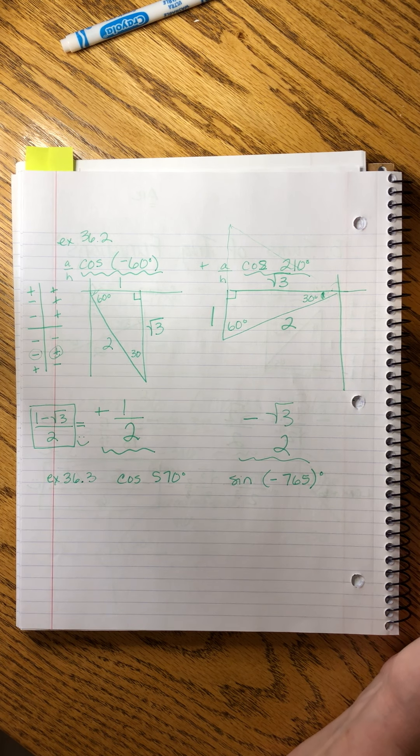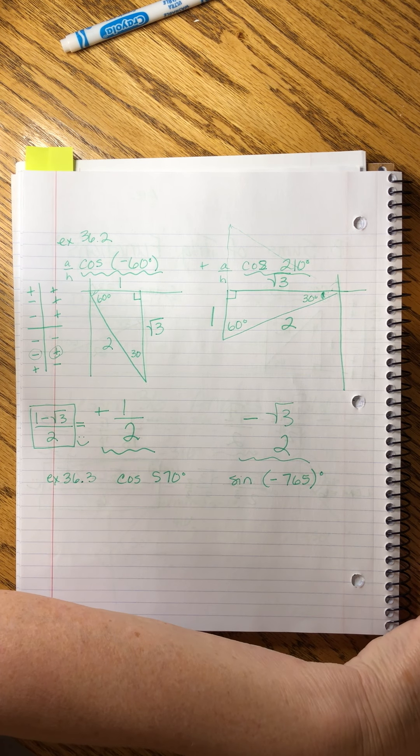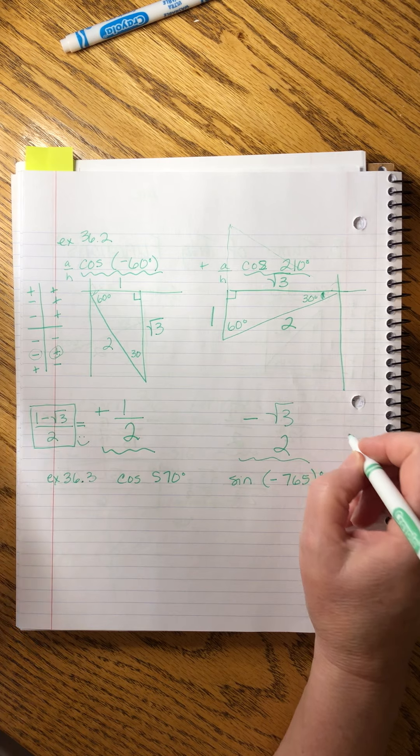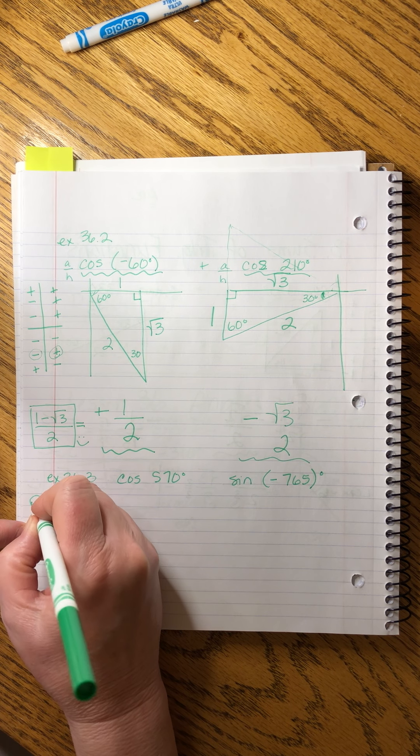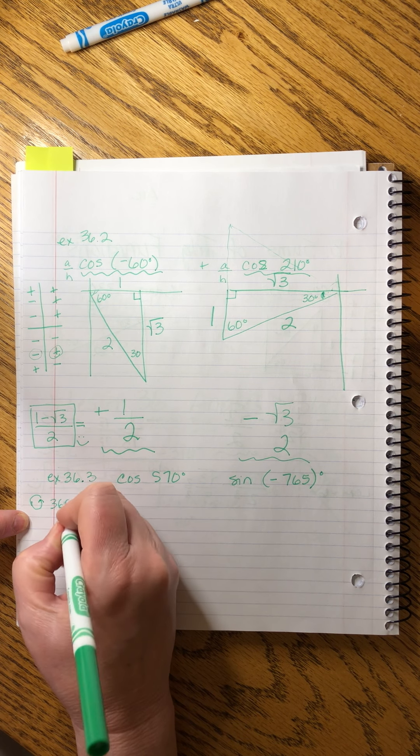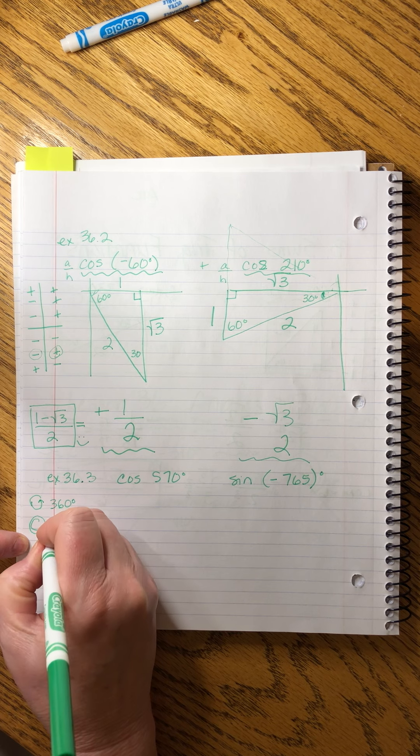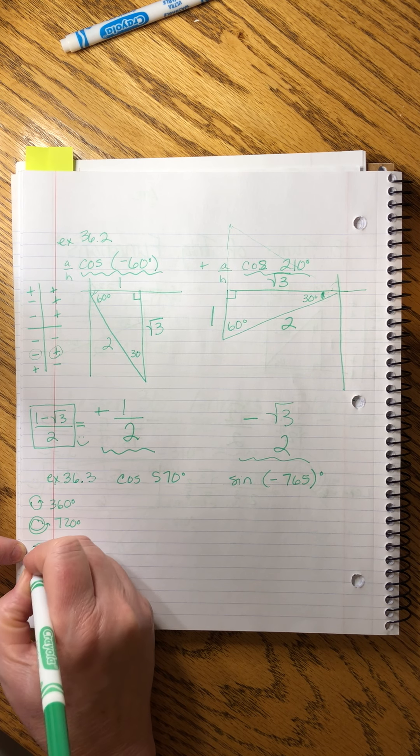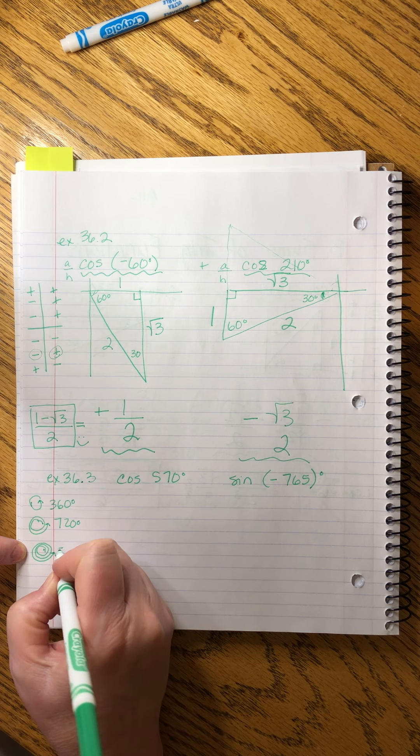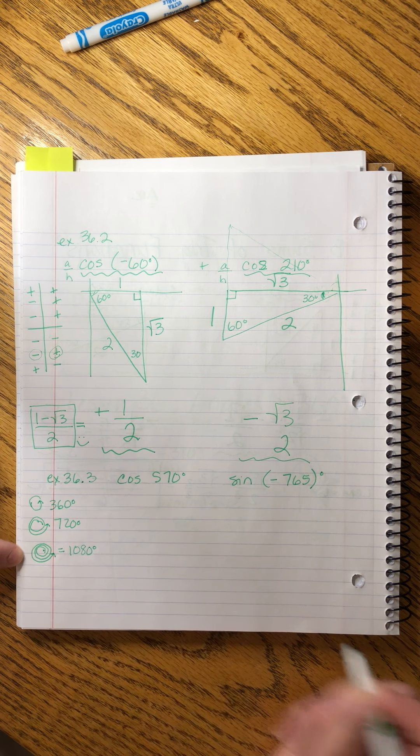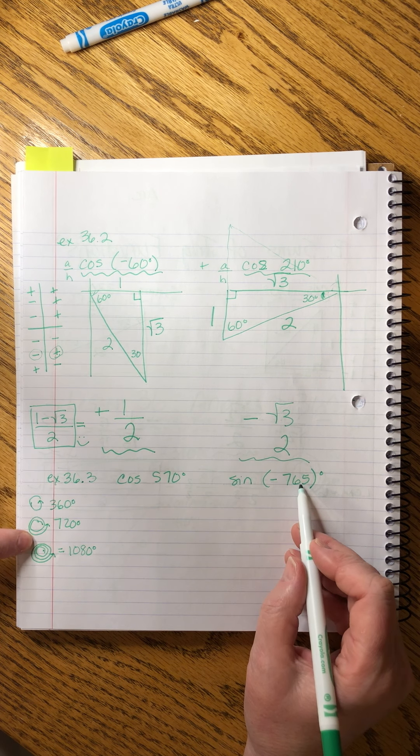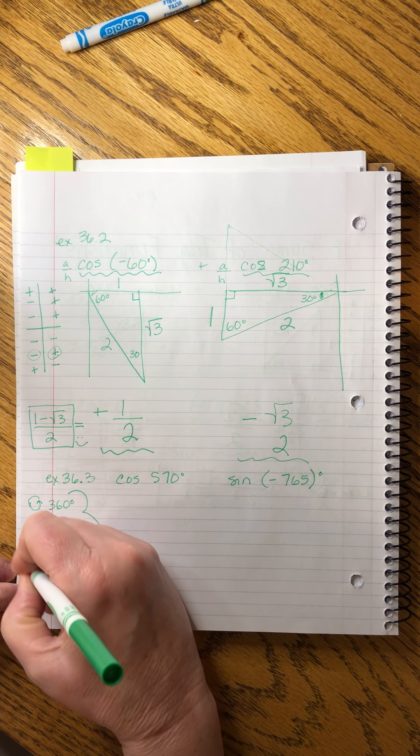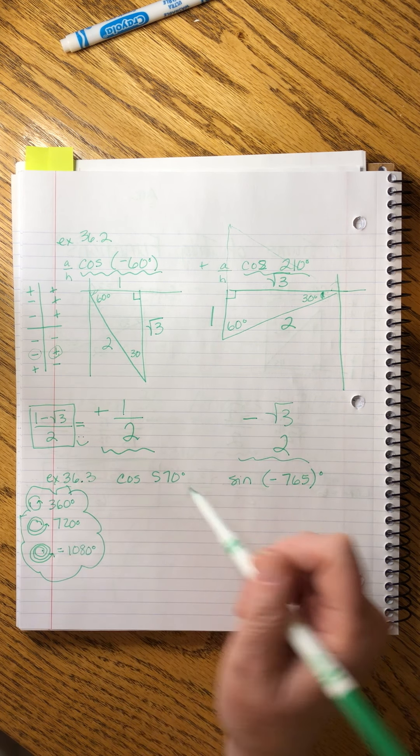And it also helps sometimes to note that one complete spin in either direction is 360 degrees. That means two complete spins is 720 degrees and three complete spins is 1080. You can keep adding as you need to, but this is helpful. When I get a number this big, I can see that's going to be two full spins plus a little bit more. So having these numbers kind of at the surface of your brain will help you make sense of these great big angles.